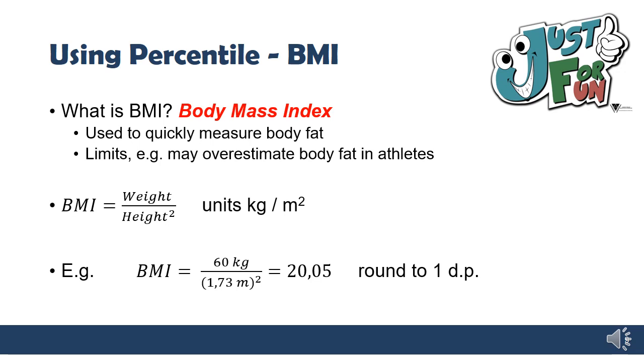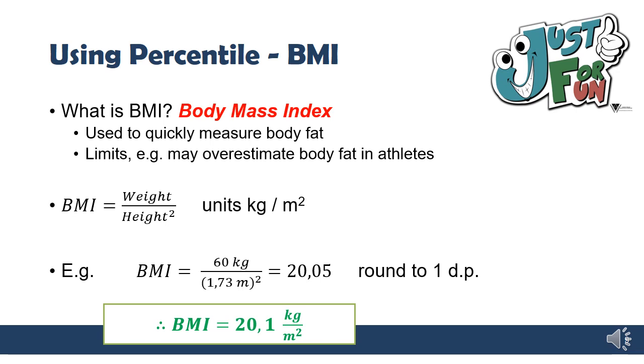As an example, and you're going to do this as part of your exit form today, let's say that a 16-year-old boy has a weight of 60 kilograms and a height of 1.73 meters. Substituting into our formula, we get 20.05 as the BMI, in kilograms per meter squared. We're going to round that to 1 decimal place, so that ends up being 20.1.